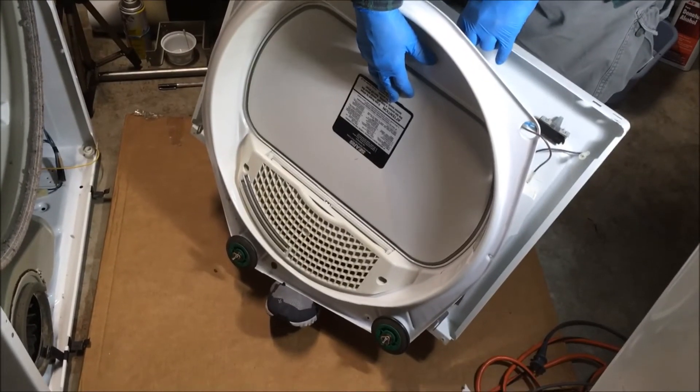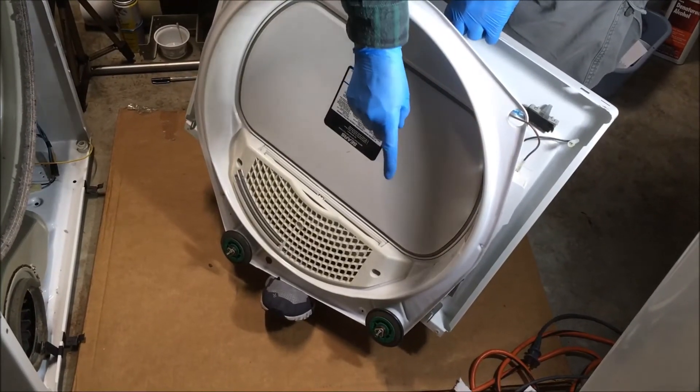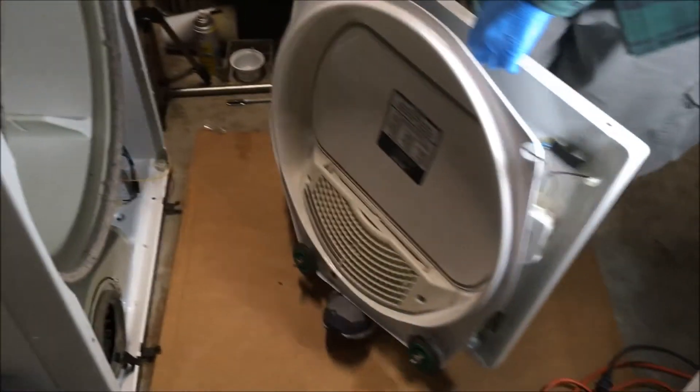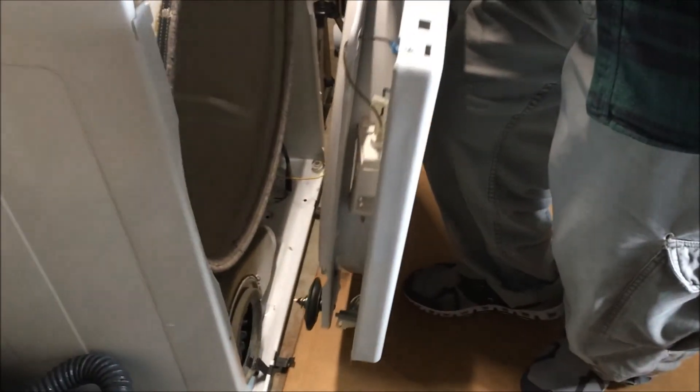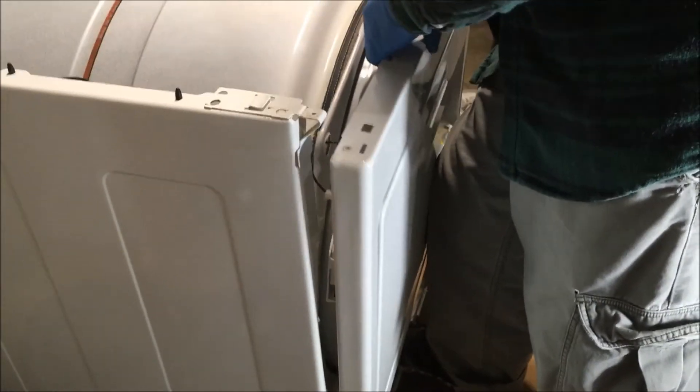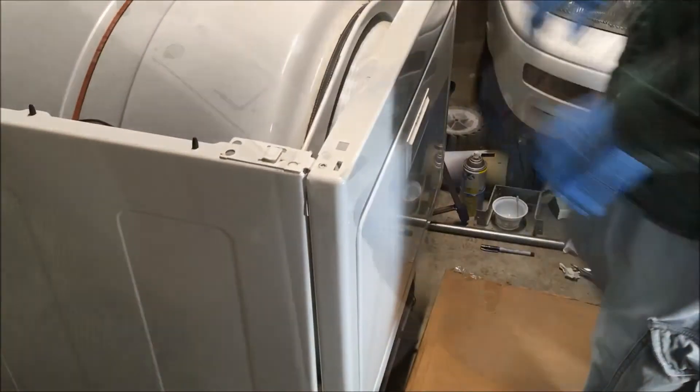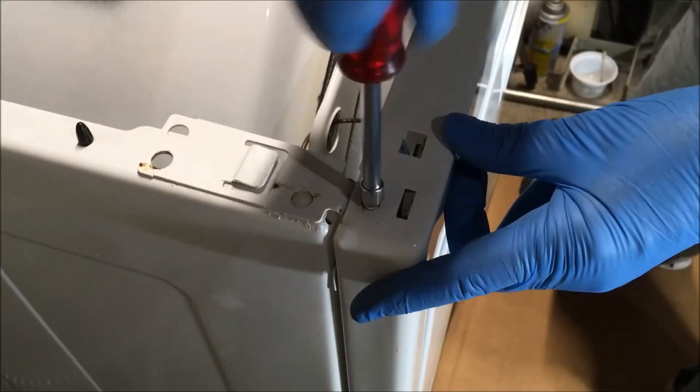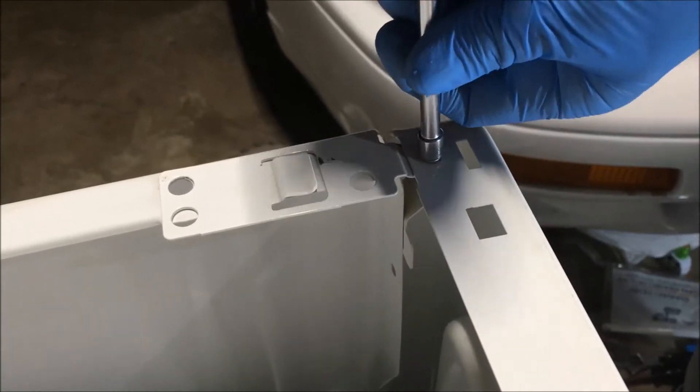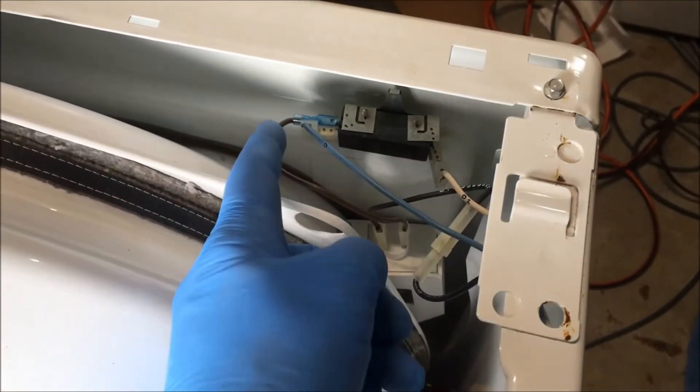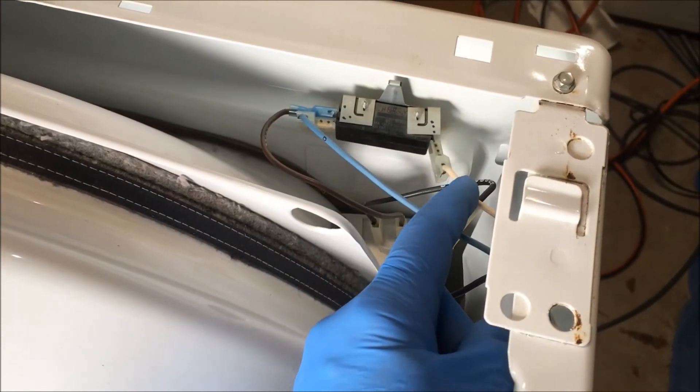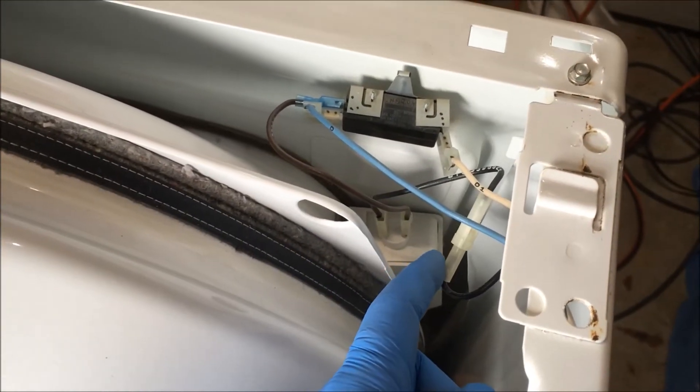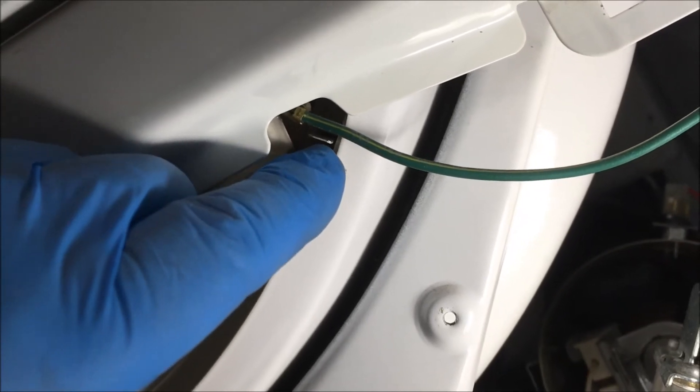I'm going to put the front top panel on now. What you want to do is get those two rollers under the lower lip of that drum and then use your knee on the panel to push in and pull up. Now replace the two screws on the top panel. Reattach the four wires to the front panel. Reattach the moisture sensor wire right there.